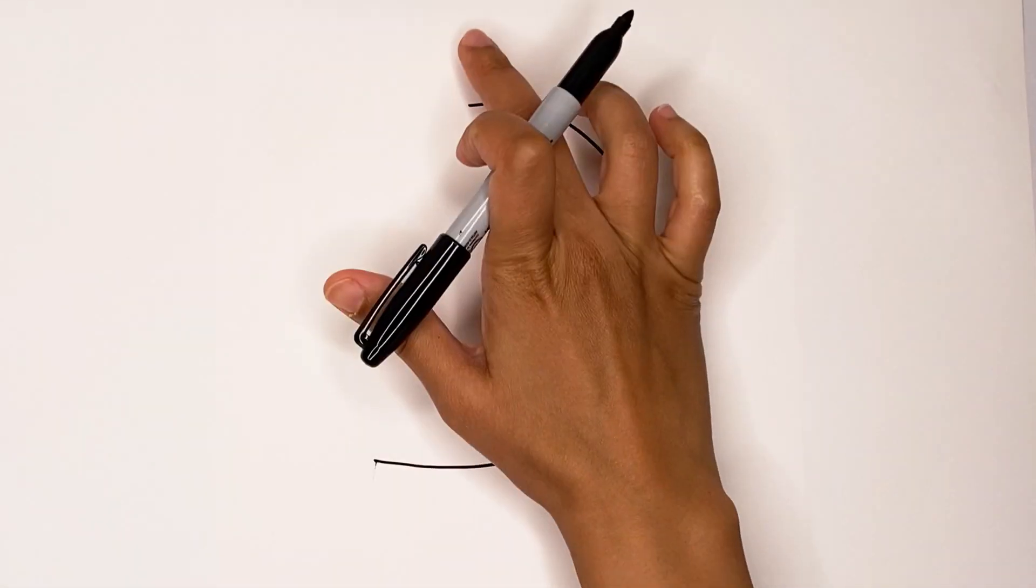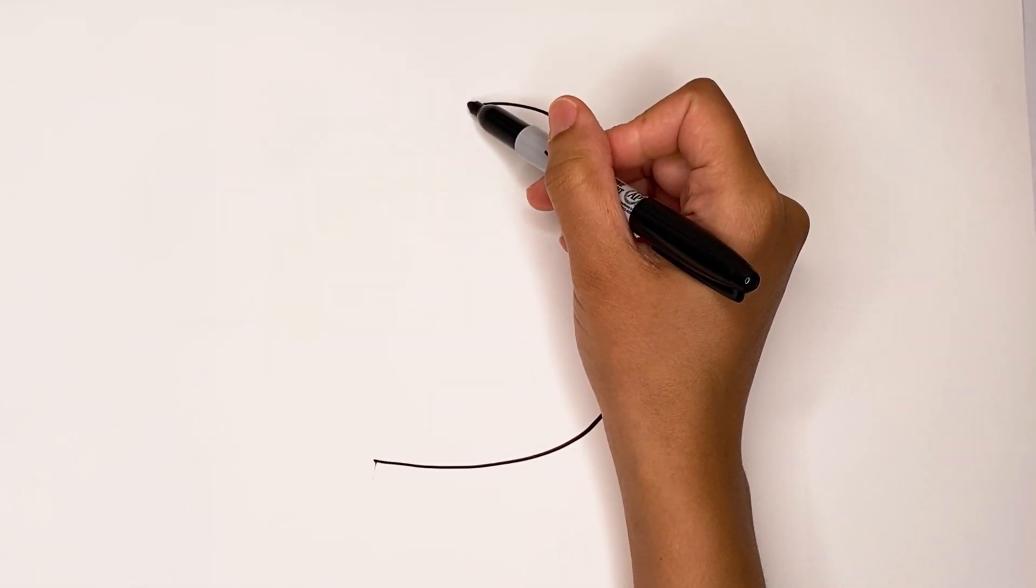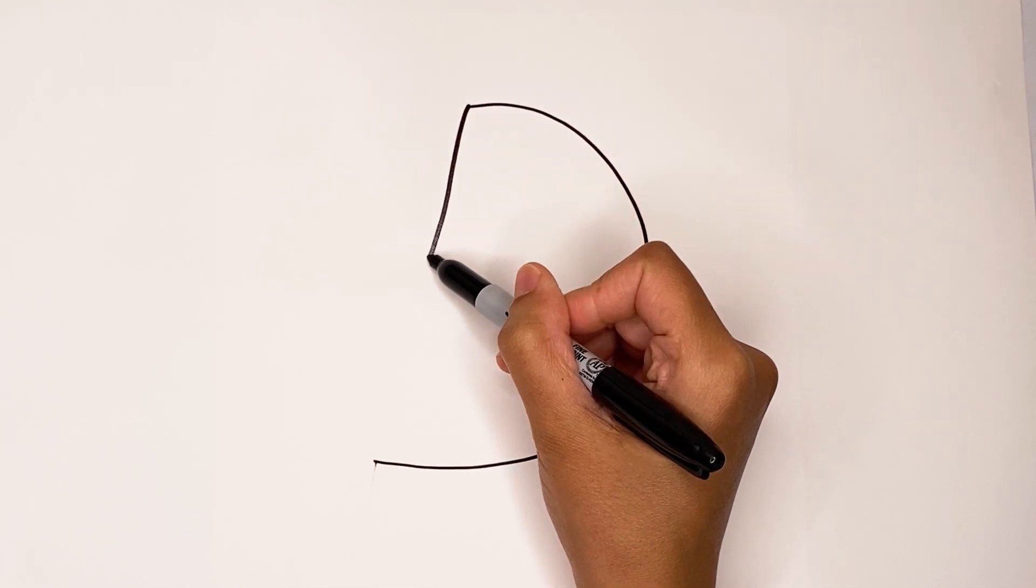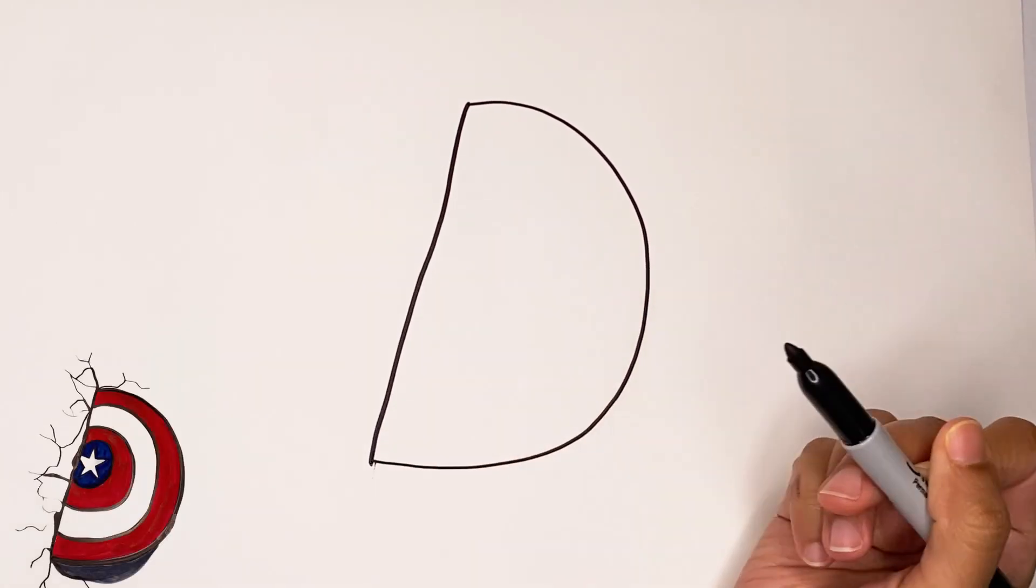I want mine to go kind of through here. Now let's draw the crack. It's just a big line that goes all the way down and it doesn't have to be perfect because it's a crack in a wall.